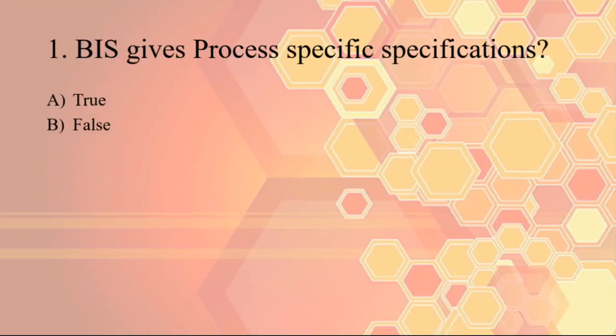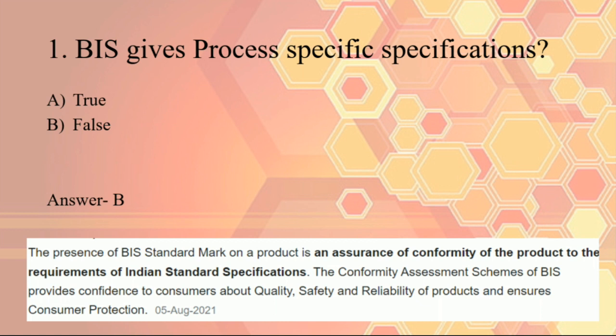Question one: BIS gives process-specific specifications — true or false? The given statement is false because BIS gives product-specific specifications. The presence of the BIS mark on any product assures that the product has been confirmed according to regulations made by Indian authorities. BIS provides product-specific certification, not process-specific. ISO, the International Organization for Standardization, provides process-specific certification.